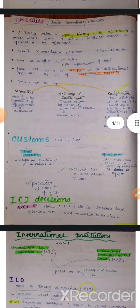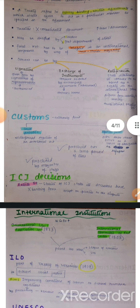The last source is ICJ decisions. Article 59 of the Statute of ICJ states its decisions have no binding force on nation states except for the parties to the dispute. Jab do parties International Court of Justice pe aate hain apni dispute leke, sirf unhi par unki decisions applicable hain, baaki saare nations pe nahi. But these decisions are quite important precedents — legal principles jo future mein follow kiye jaayenge.